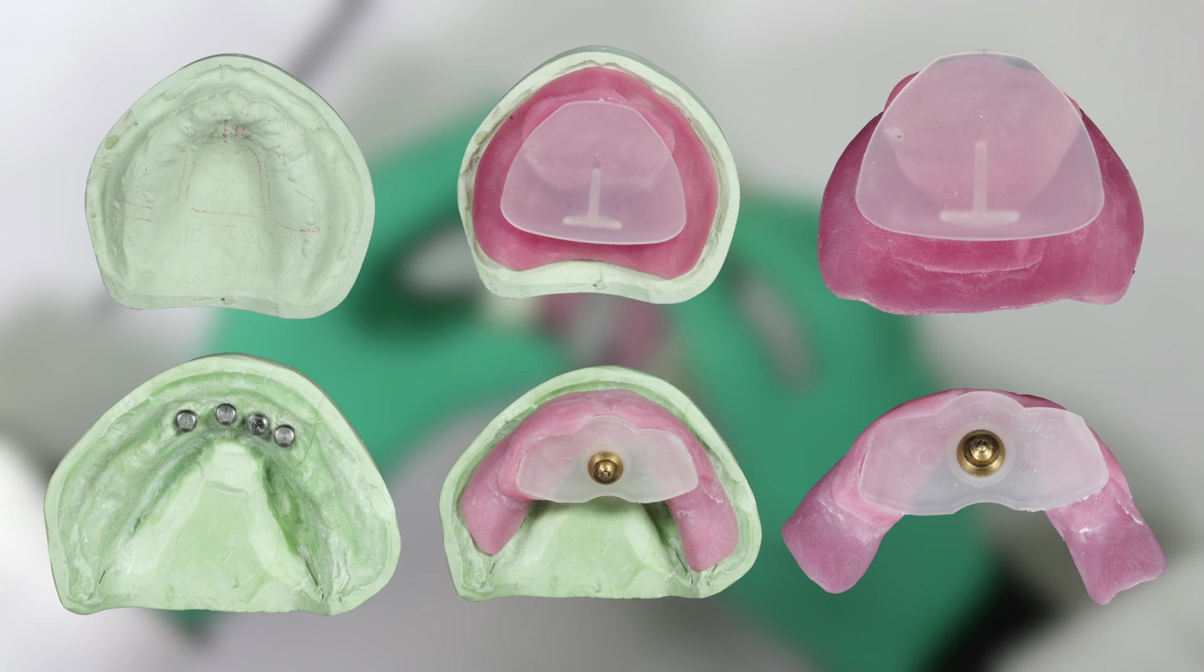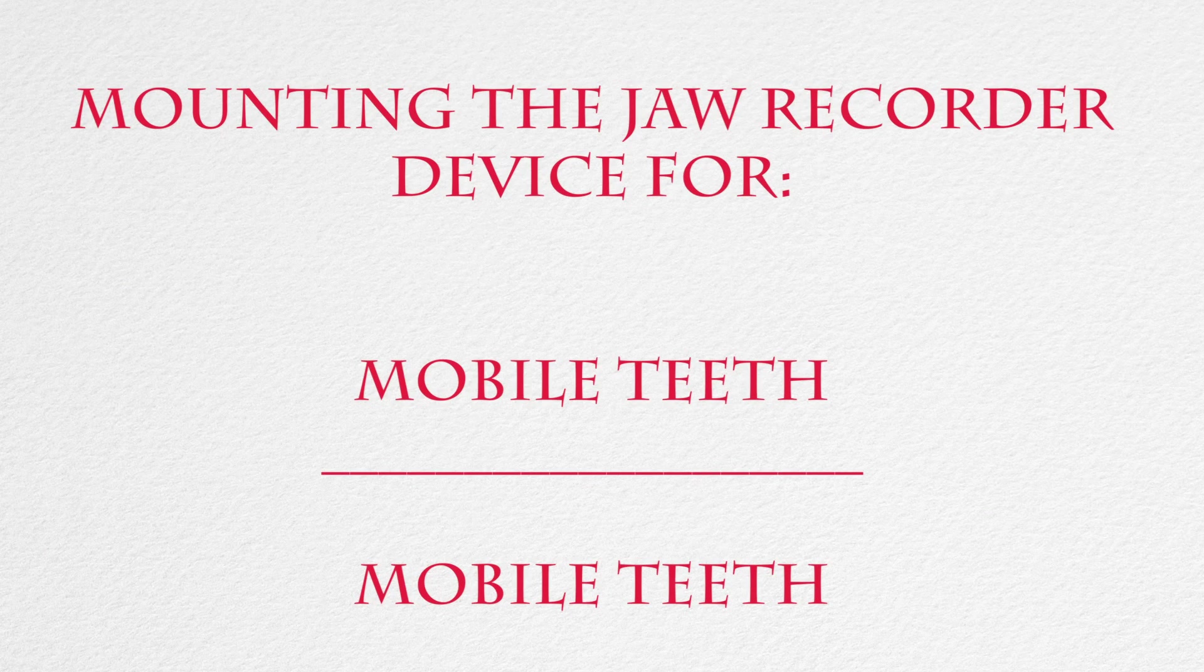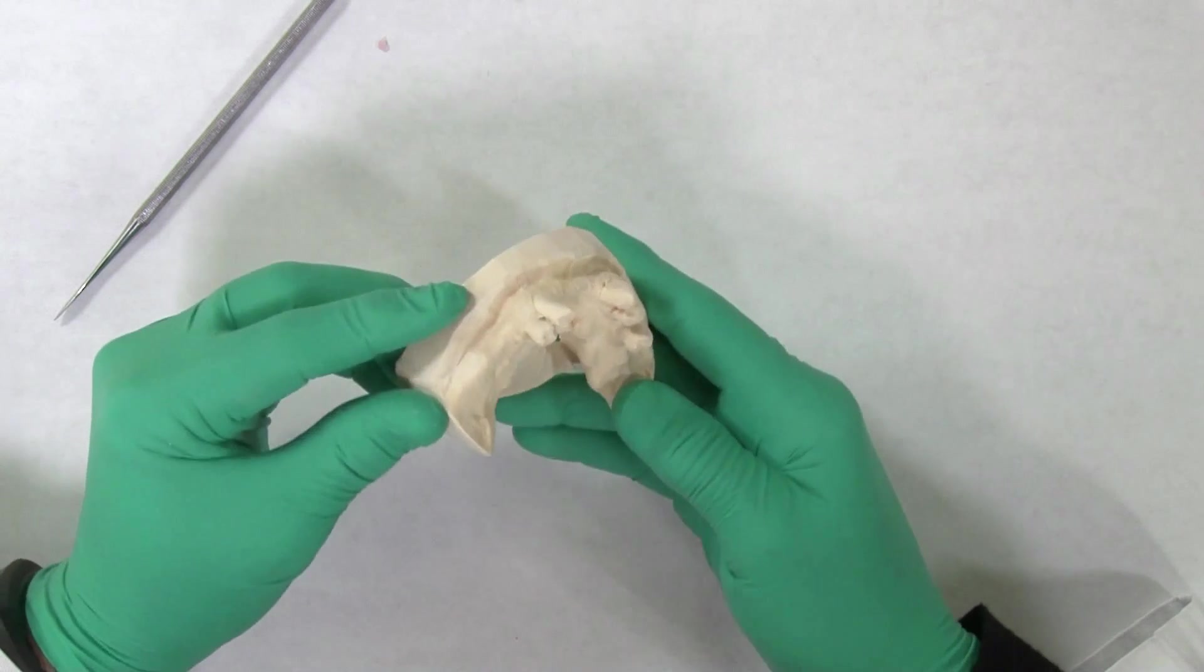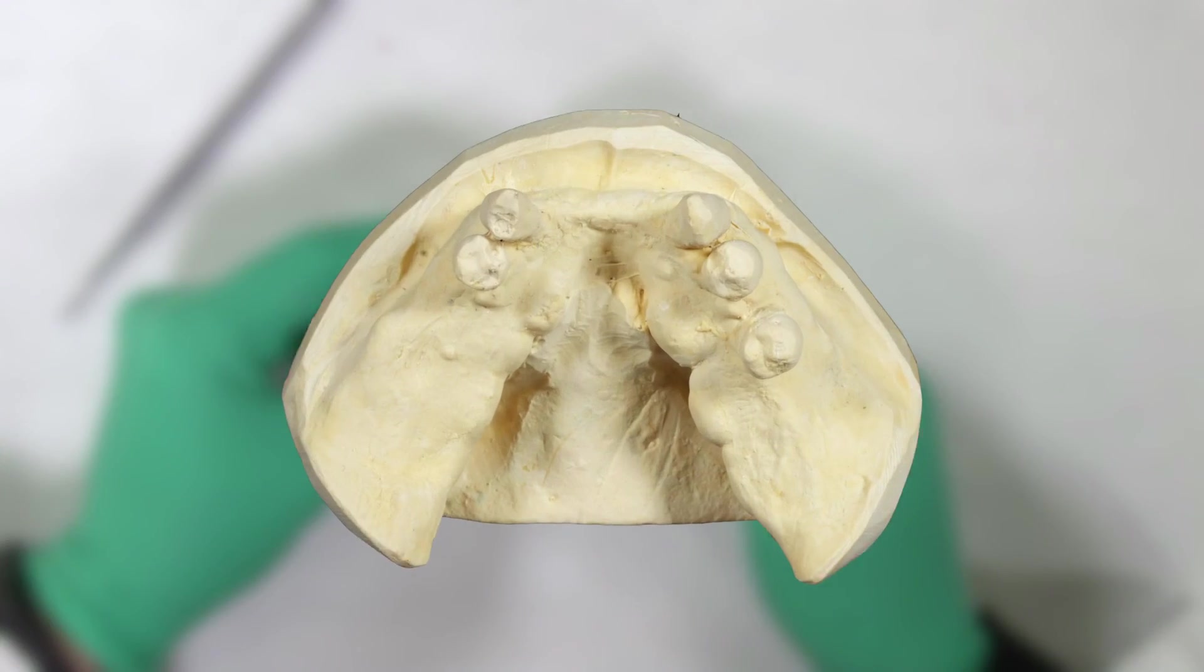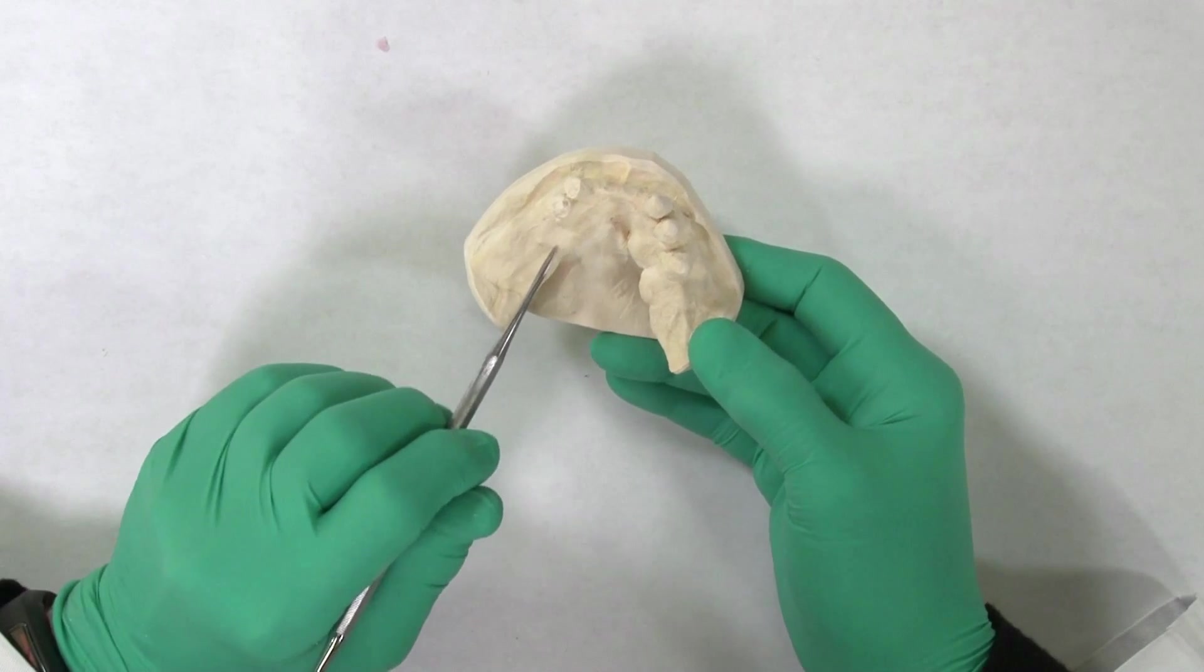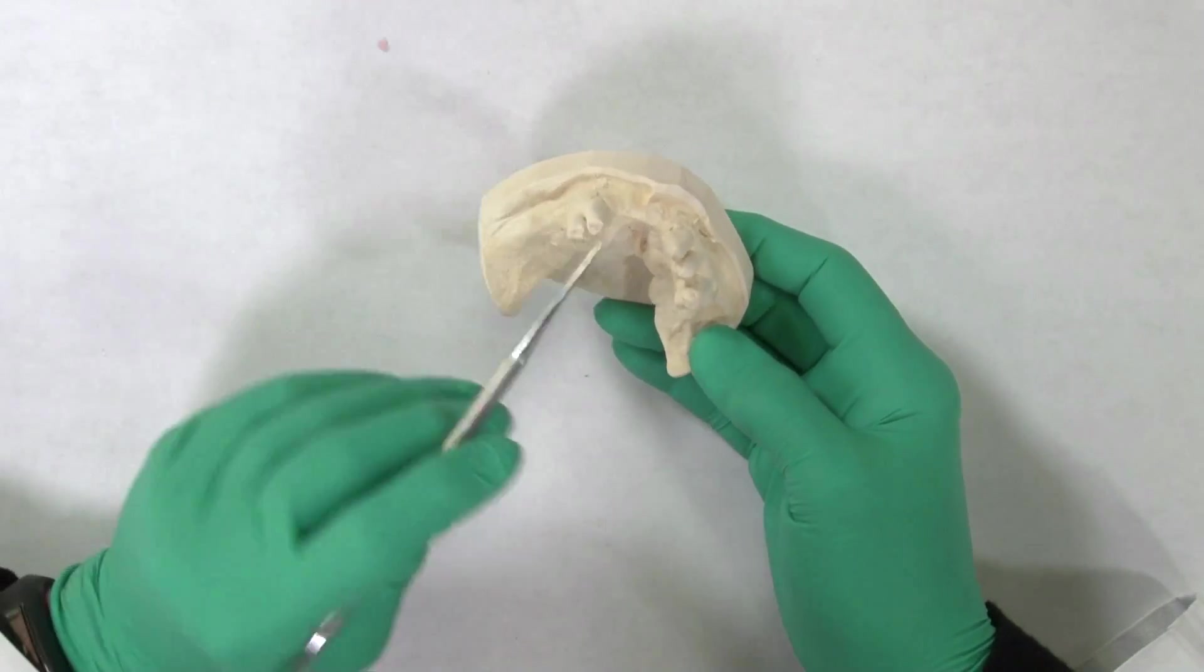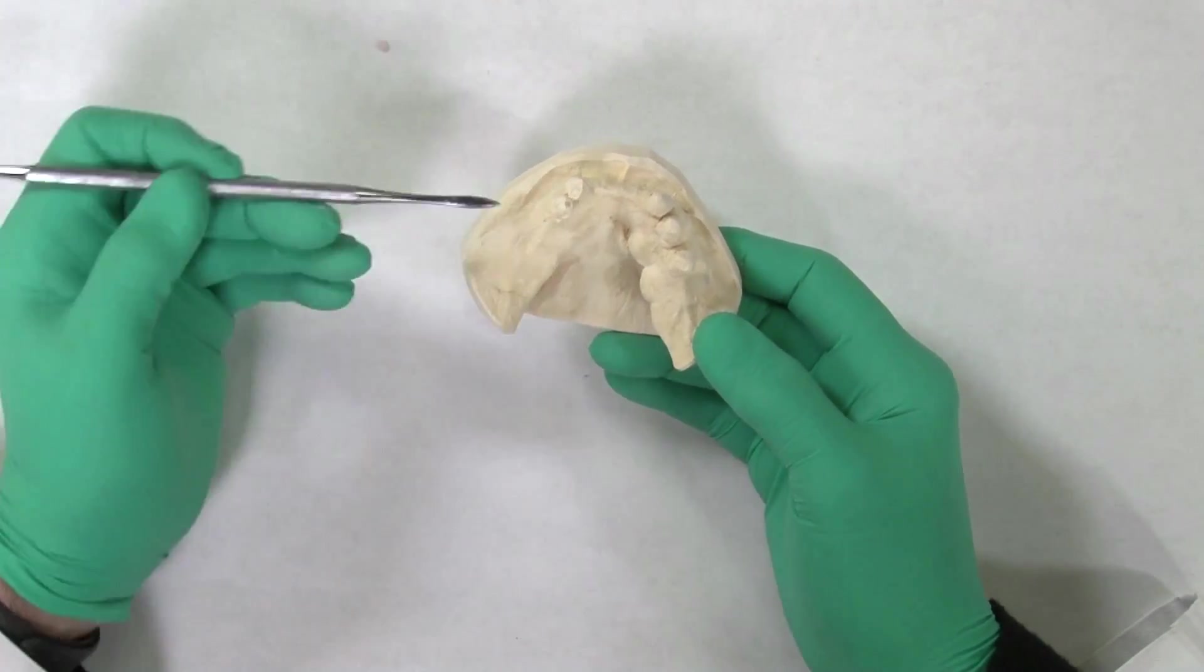In this case, there is a partially edentulous mandibular arch with large tori and mobile teeth. It is virtually impossible to record a bite using conventional methods such as wax or bite registration materials, as the teeth will move when pressure is applied, and the mounting will be incorrect.